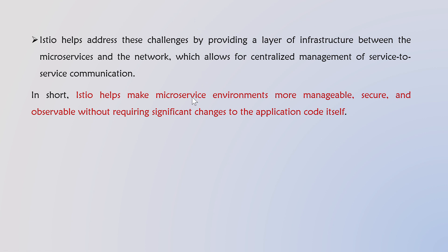Istio is one of the most widely adopted service mesh implementations, specially designed to work with Kubernetes, though it can be deployed in other environments as well. Istio introduces a powerful control plane and orchestrates data plane proxies deployed as sidecar containers alongside each service instance.